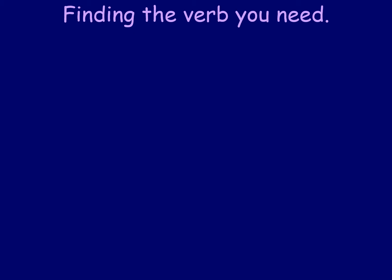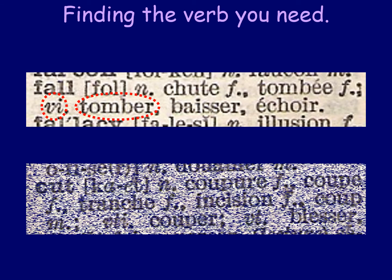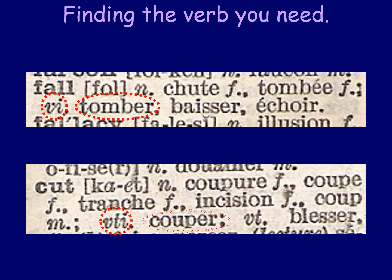In French you need to find the verb you need — that's the first thing to do. You could look it up in a dictionary. For example, 'tomber' is an ER verb, and 'couper' is another ER verb meaning to cut. So if you want to say something in French, you have to look it up first.